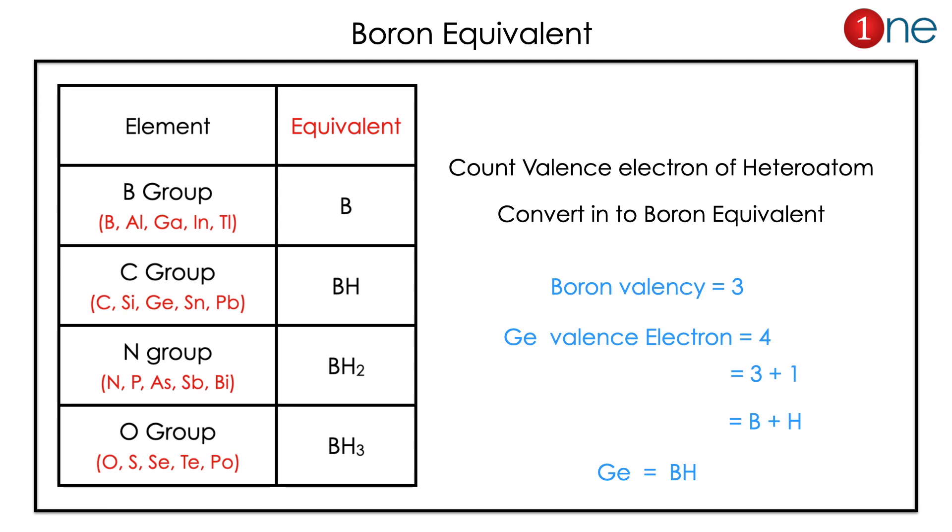If it is a carbon group, carbon valence is four, boron valence is three. To achieve the four valence you have to add one hydrogen, so the carbon group has BH as the equivalent.